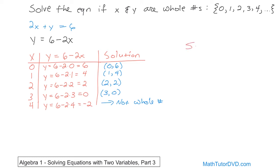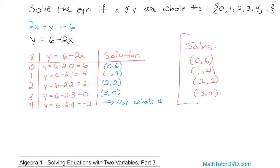So the solutions are as follows: (0, 6), (1, 4), (2, 2), and (3, 0). There are no more solutions that are whole numbers. We're saying we only want to see answers that are whole numbers, so this would be the complete solution set.